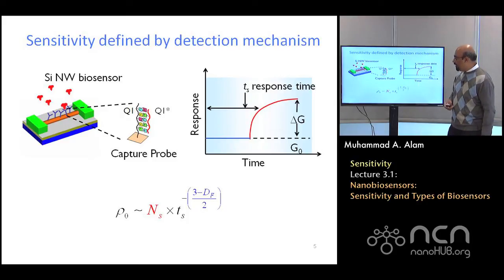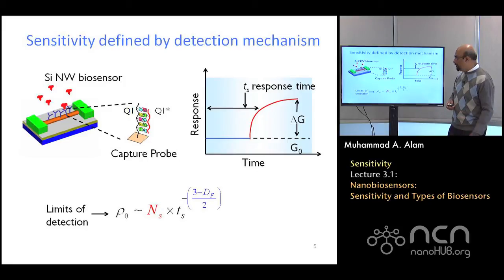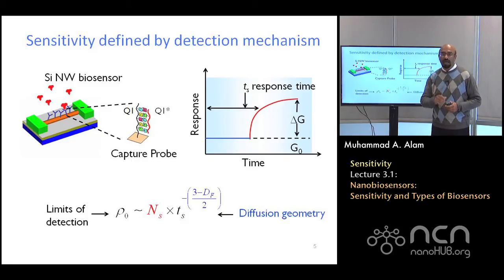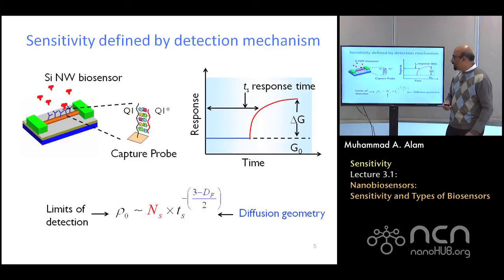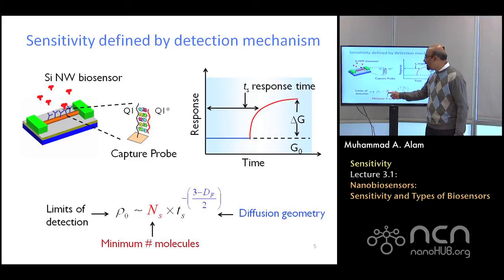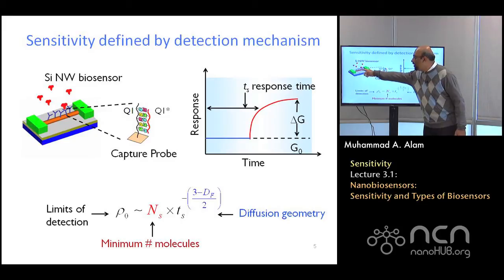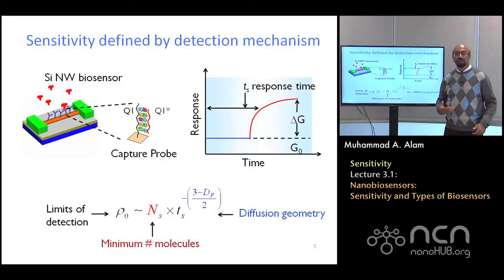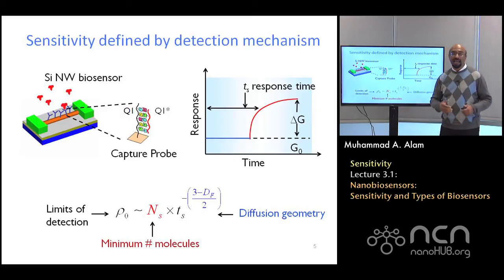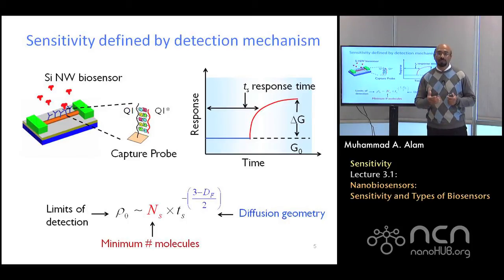Looking at the formula we derived before defining the limits of detection: one is the diffusion limit — that is Part 1 of the course, covering the past 12 lectures. The topic we'll now discuss is how many molecules you really need in order for the sensor to respond. We are going to discuss the physics of NS, and the physics of NS depends on specific sensor technology.